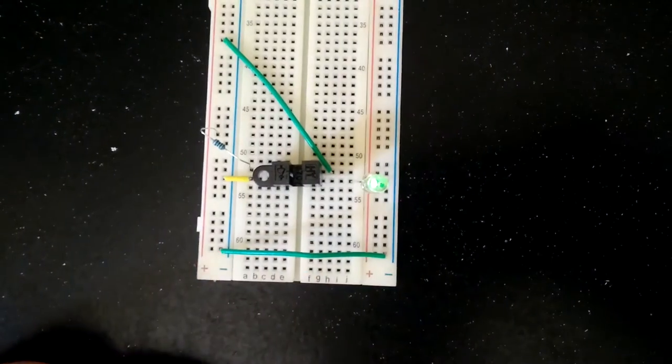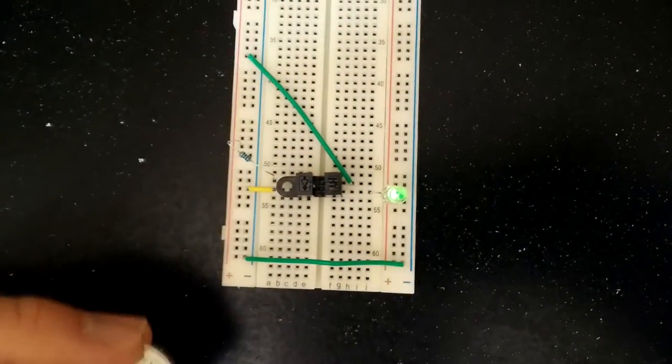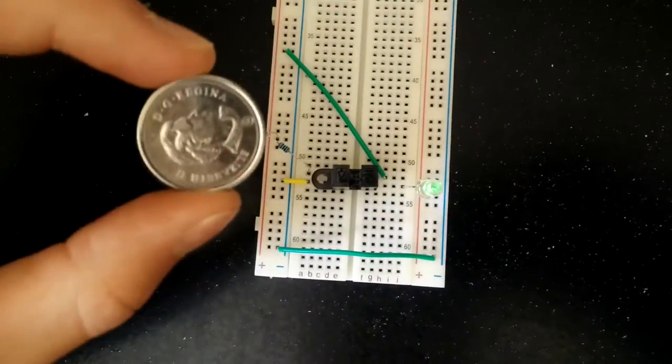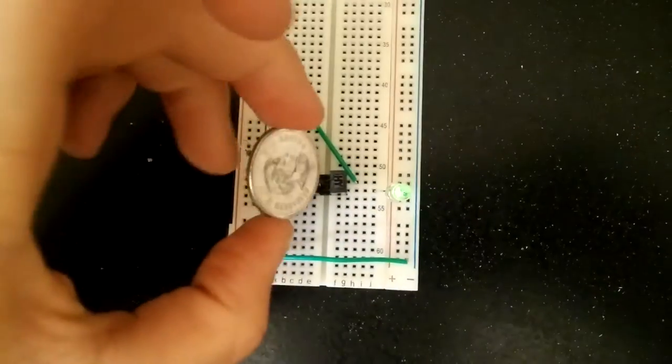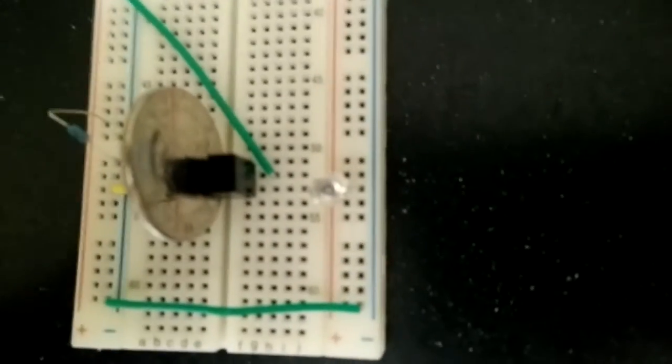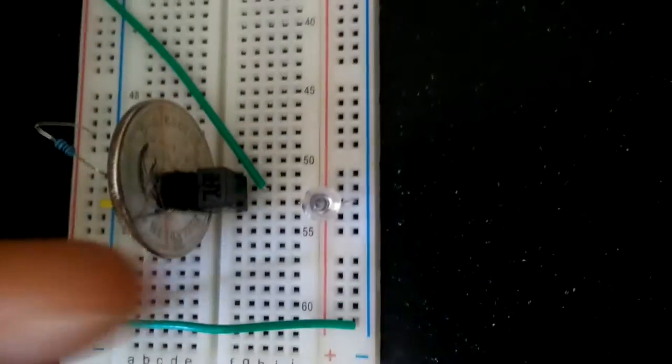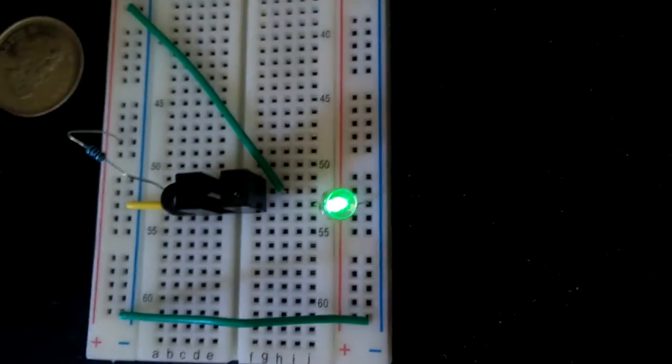Alright, so a small demo. I got this coin here and when I put it in between you can see that the light turns off, and then if I remove it, light turns on again.